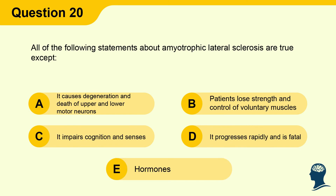Question 20: All of the following statements about amyotrophic lateral sclerosis are true except: A) It causes degeneration and death of upper and lower motor neurons. B) Patients lose strength and control of voluntary muscles. C) It impairs cognition and senses. D) It progresses rapidly and is fatal. E) Hormones.